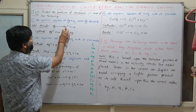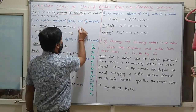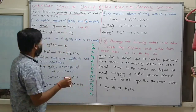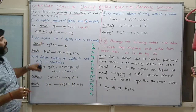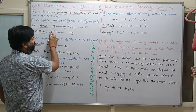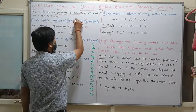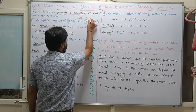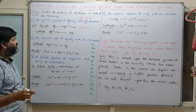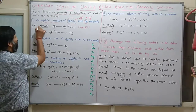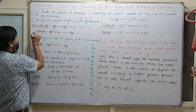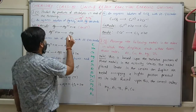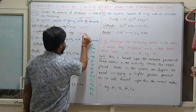At the cathode, Ag⁺ ions are attracted and reduced to deposit silver. The anode is positively charged and the cathode is negatively charged. Reduction takes place at the cathode. So when electrolysis of silver nitrate solution starts, Ag⁺ ions are attracted to the cathode and deposited.